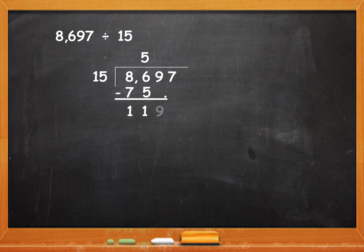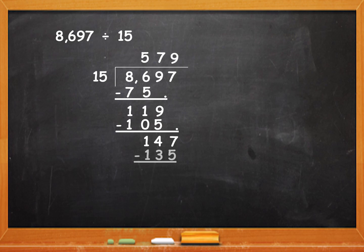Bring down 9. 15 will go 7 times in 119. 15 sevens are 105. Remainder is 14. Bring down 7. 15 will go 9 times in 147. 15 nines are 135 and the remainder is 12. Quotient is 579 and remainder is 12.